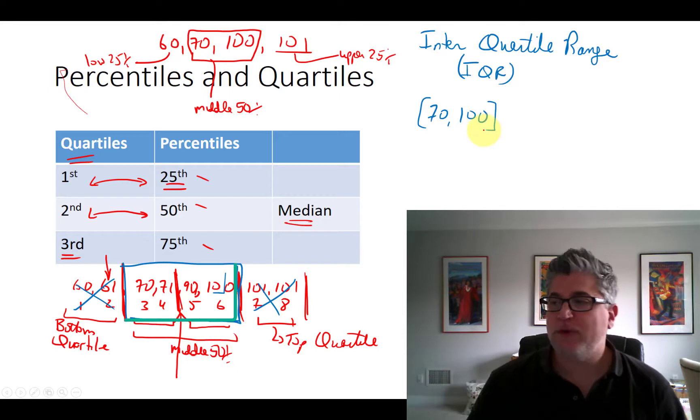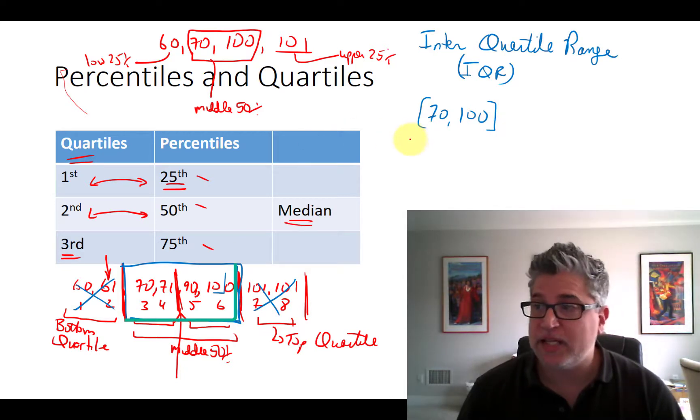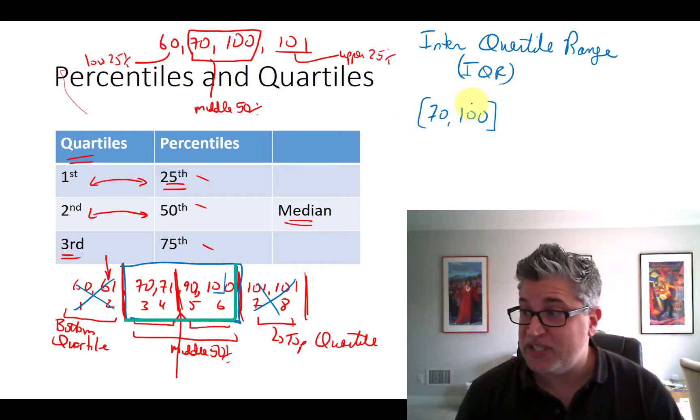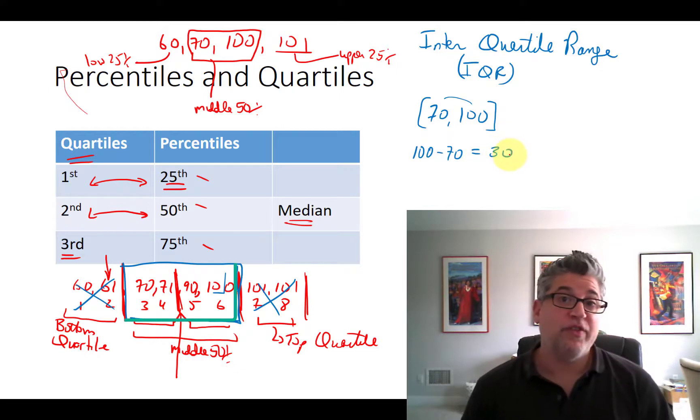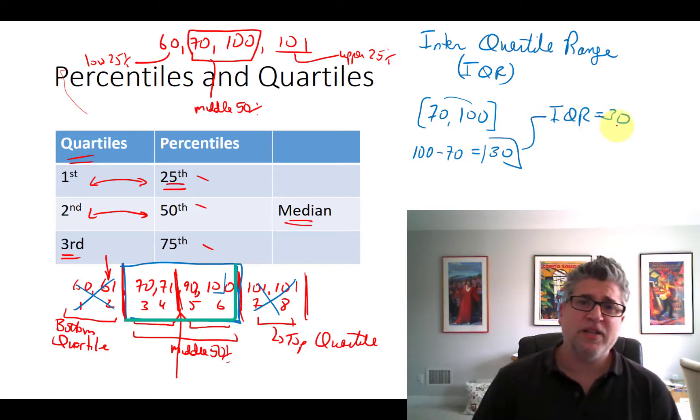So you could express the interquartile range as 70 to 100 if you're being kind of a normal person. If you're really a geeky statistician, you report the range as the distance between these two numbers. So you would report an interquartile range of 30. So the interquartile range is 30.